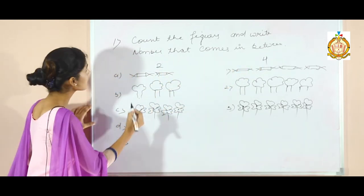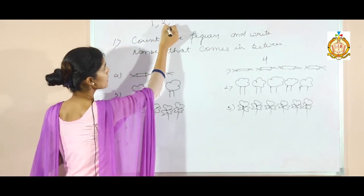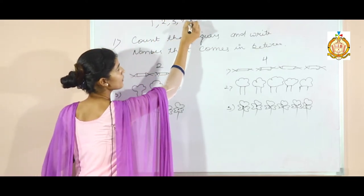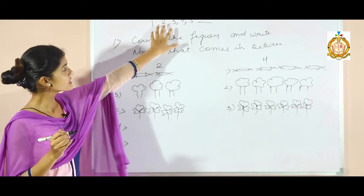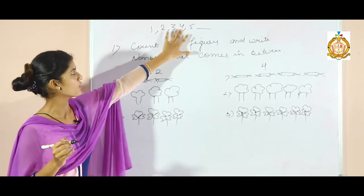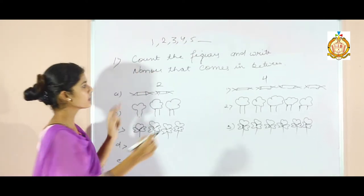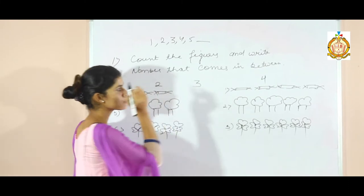Counting you all know. Like counting we are going to start 1, 2, 3, 4, 5 and so on. Now, which number comes between 2 and 4? That is 3. 3 number comes between 2 and 4.